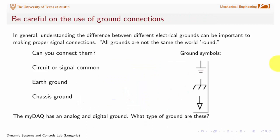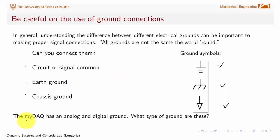As far as making signal connections, be mindful that there are different kinds of connections and different kinds of grounds. There's a circuit ground or signal common, an earth ground, and a chassis ground — each represented by different schematic symbols. The MyDAQ has an analog and digital ground, and those are not necessarily the same, so sometimes you need to hook those together. Identifying what types of grounds those schematic symbols represent is a little exercise for you.